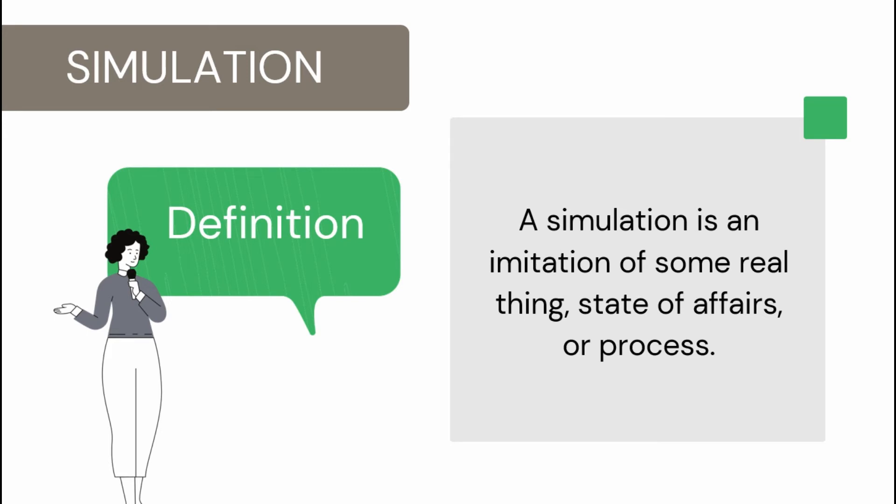Next we have simulation. A simulation is an imitation of some real thing, state of affairs, or process. The act of simulating something generally entails representing certain key characteristics or behaviors of a selected physical or abstract system.